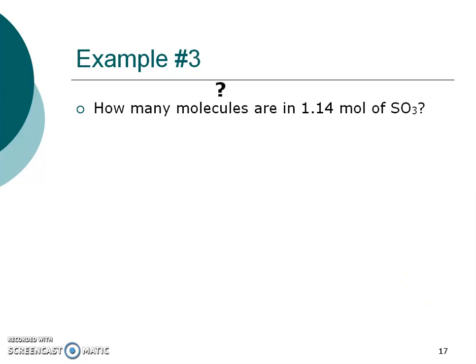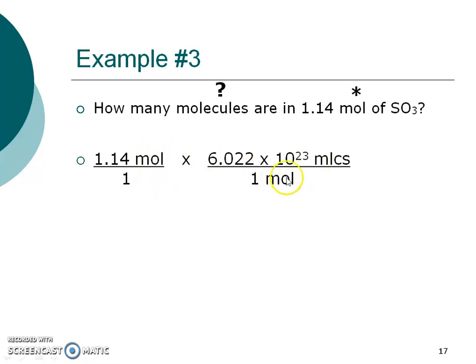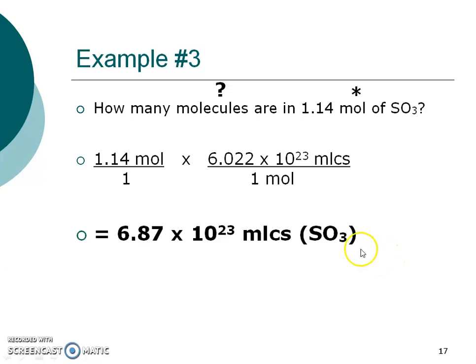Example 3: How many molecules are in 1.14 moles of SO₃? This looks like a molecule to me — it's a covalent compound starting with a non-metal. I'm going to start at 1.14 moles. My conversion setup is going to be molecules over moles, because I've got to get rid of that mole unit. Do the mathematics in order, use that EE button, and see if you get the same answer. These are molecules because it's a covalent or molecular compound.